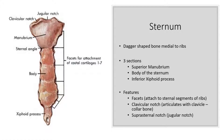The axial skeleton also involves the sternum, which is a dagger-shaped bone that's medial to your ribs. There are three sections to the sternum: the manubrium, the body, and the xiphoid process. Features of the sternum include facets where the sternal segments of the ribs attach, the clavicular notch that articulates with the clavicle, and the suprasternal notch, also sometimes called the jugular notch.